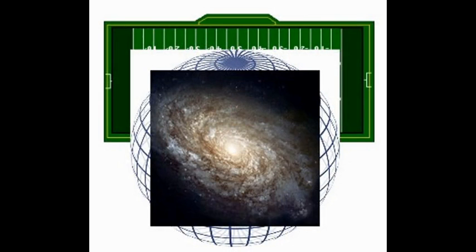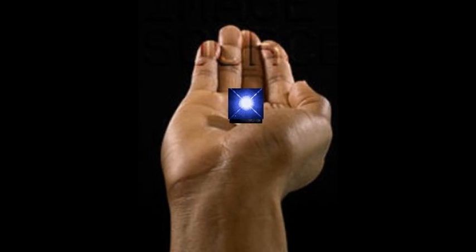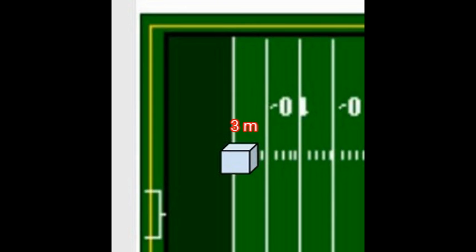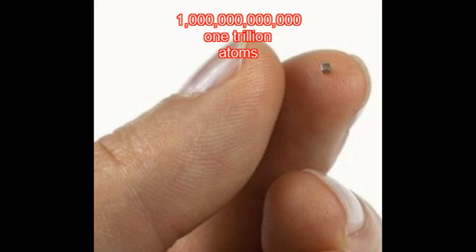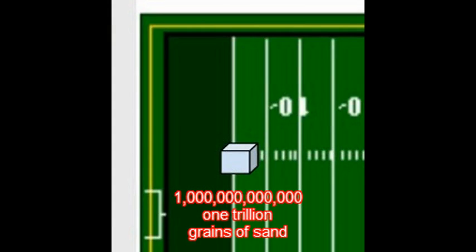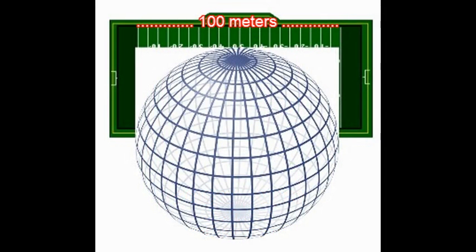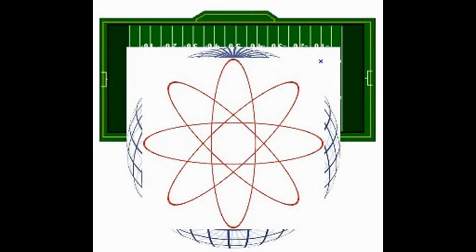If a typical galaxy was the sphere, then each grain of sand would represent a star. To visualize the smallness of the atom, an imaginary 3 meter wide cube over the sport field can be used. There are as many atoms in a 1 millimeter wide cube of gold as there are grains of sand in our imaginary cube over the sport field. If an atom was represented by a 100 meter diameter sphere, then the nucleus of the atom would be a grain of sand 1 millimeter in diameter in the middle of the sphere, and the electrons would be a fog filling the sphere.